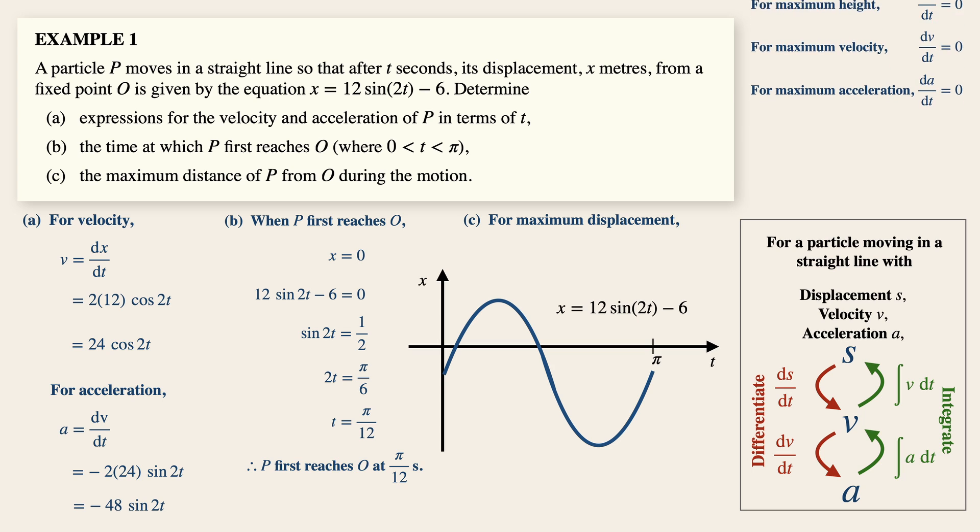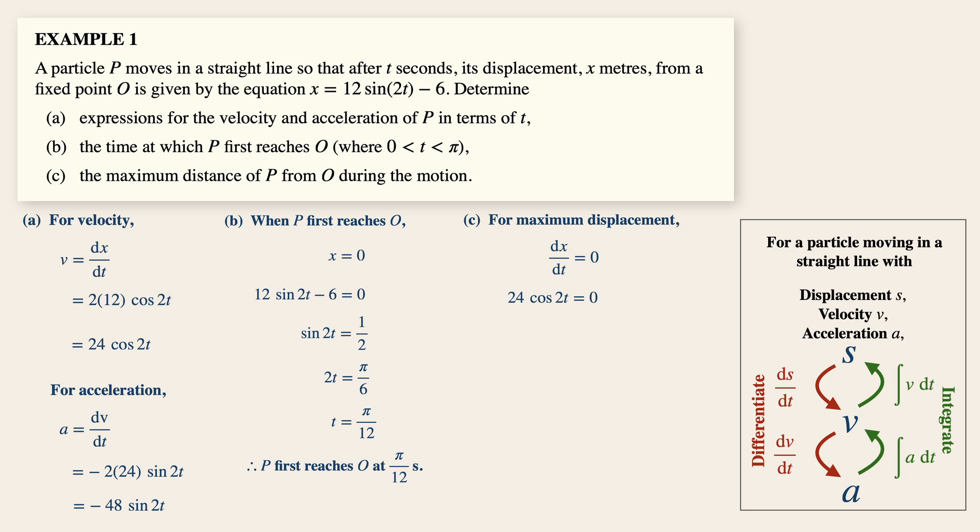Now in this case, at maximum displacement, dx over dt is equals to zero. Thus, 24 cosine 2t is equals to zero. Now 2t is simply pi over 2 and 3 over 2 pi, which is in the given domain.